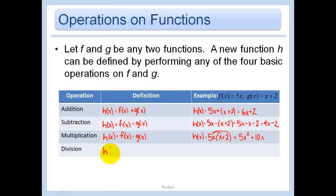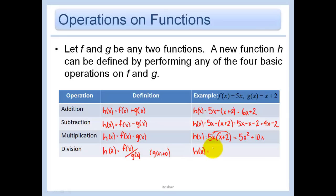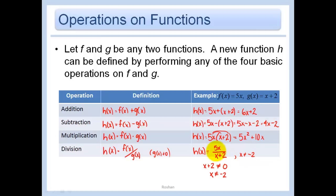When I do division, I just do f of x divided by g of x. I must make sure that g of x is not equal to 0 so that I don't divide by 0. So h of x equals 5x divided by x plus 2. We need to make sure that x plus 2 does not equal 0 — in other words, that x does not equal negative 2.